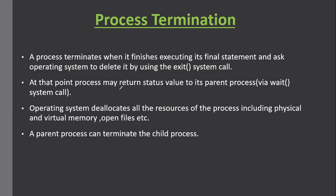When a process terminates, it returns a status value to its parent process via the wait system call. When a child process terminates, it returns a status to its parent so that when the parent executes the wait system call, it can know that the child has terminated its execution. Hence the parent process removes the entry of the child process from the process table, because that process has terminated.